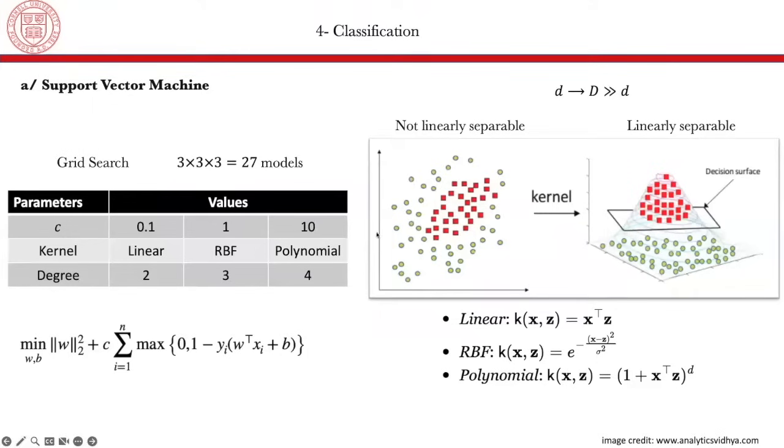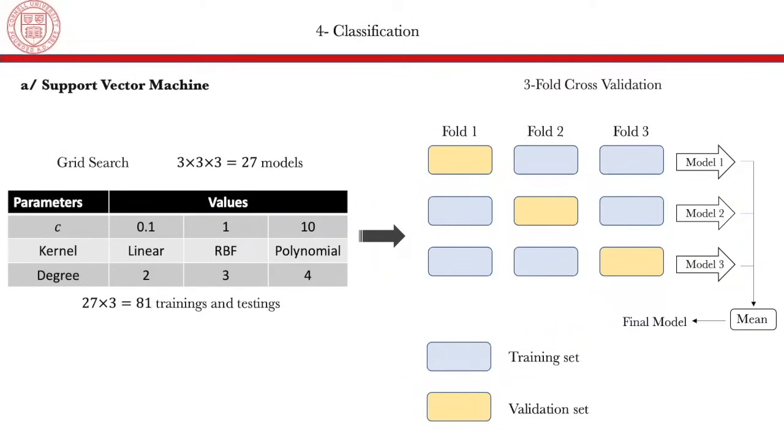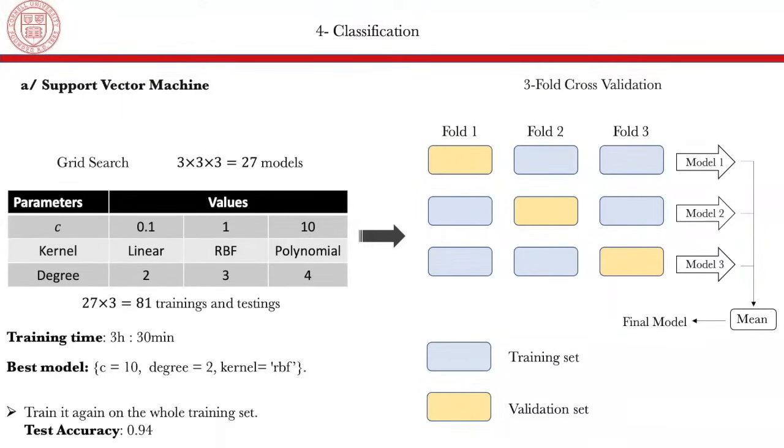So I did a grid search. So I varied the value of C. I chose three different values. I also chose three different kernels. And I also changed the degree. And the degree here corresponds to the degree of the polynomial in this case, or the value of sigma in the case of the RBF. So we have three by three by three equals to 27 models. And in order to select the best model out of these 27 models, we use a three-fold cross-validation. So we train our models in fold two and three and test them in fold one. Then we train them in fold one and three and test them in fold two. And then we train them in fold one and two and test them in fold three. And then we take the mean and choose the best model. In this case, we have 27 models that are trained three times. So we have 81 trainings and testings. And this whole operation takes about three hours and 30 minutes, which is very long.